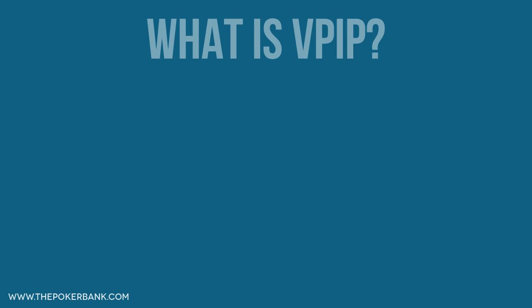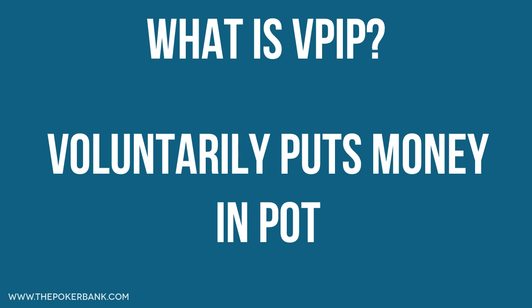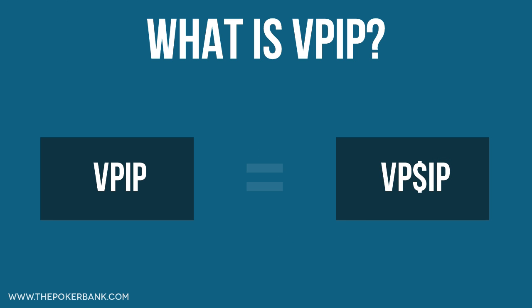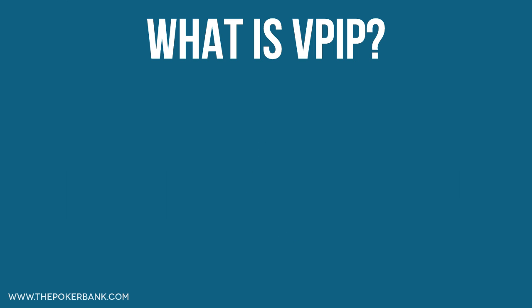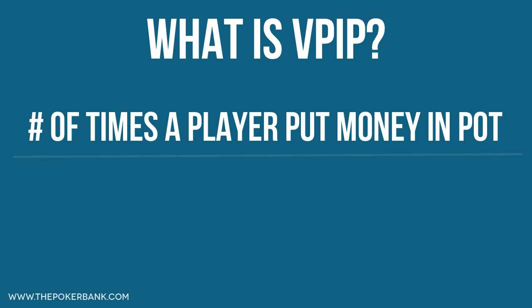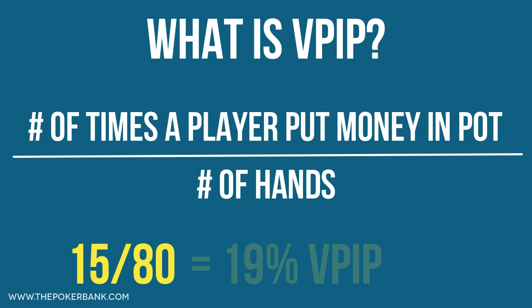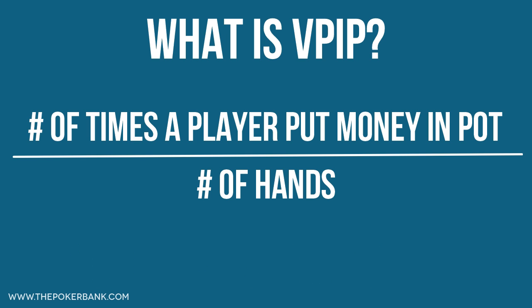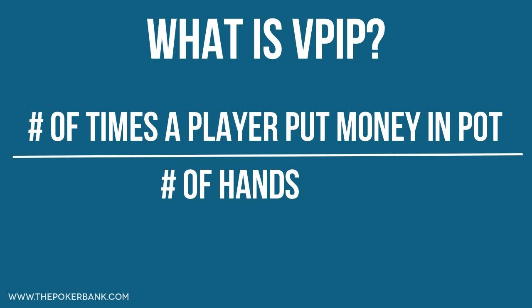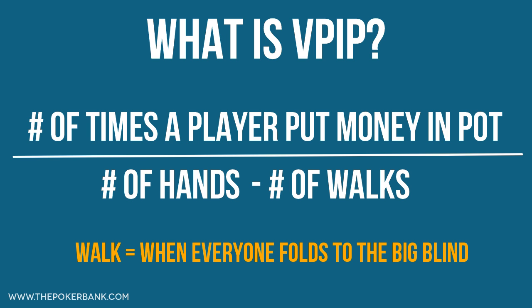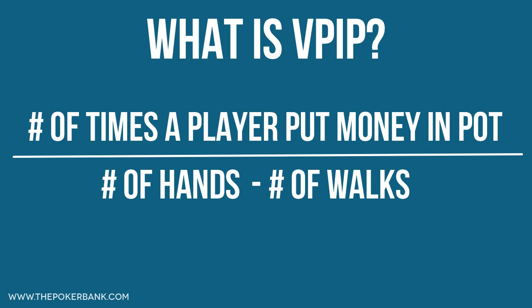First, what is VPIP? VPIP stands for Voluntarily Puts Money in Pot and is a preflop stat. You may see this written online as VPIP or VP$IP, but they both mean the same thing. The legacy formula for VPIP is simply the number of times a player put money in the pot divided by the number of hands. So if a player played 80 hands and voluntarily put money into 15 of them, he would have a VPIP of 19%. The more current formula for VPIP is the number of times a player put money in the pot divided by the number of hands minus the number of walks. A walk is simply when everyone folds to the big blind and he wins the pot. We subtract walks because in a walk situation the big blind has zero opportunity to voluntarily put money in the pot. But I think the best way to understand VPIP is to see it in action.